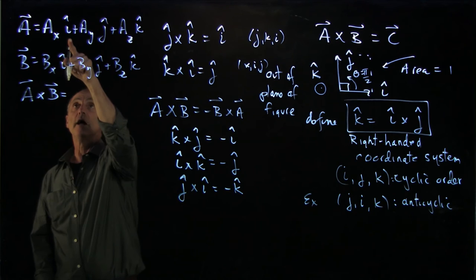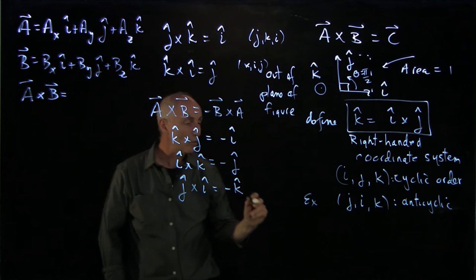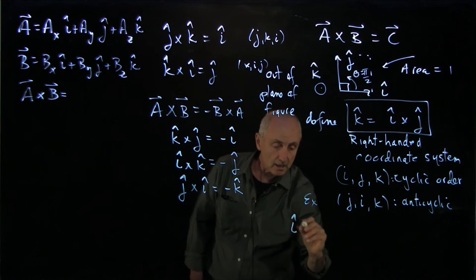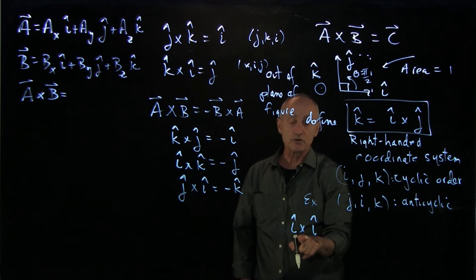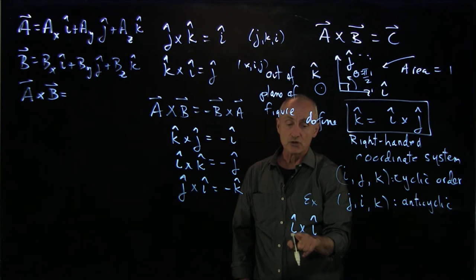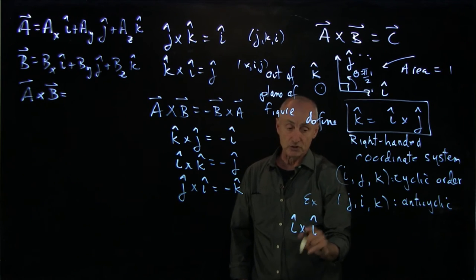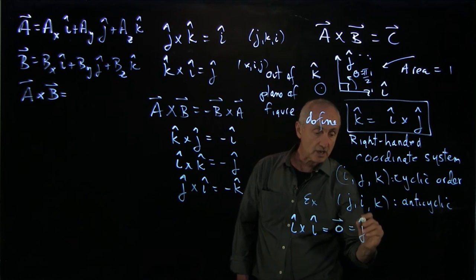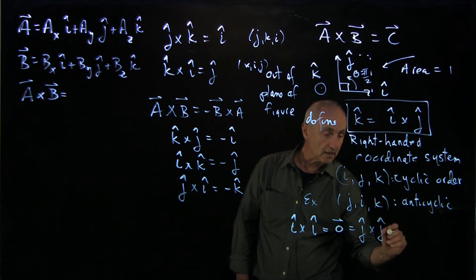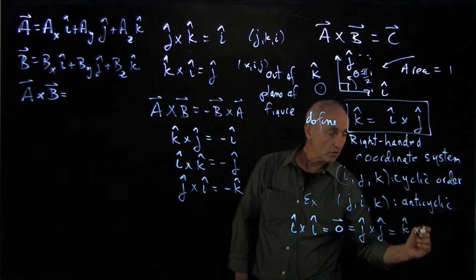Because I have i hat, well, we actually should say one more thing, that i hat cross i hat, the angle between these two vectors is 0. There is no perpendicular projection. So that's 0,